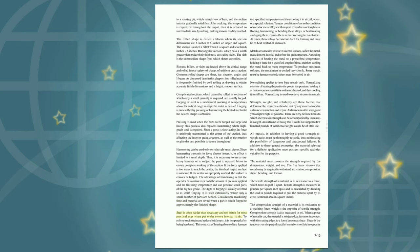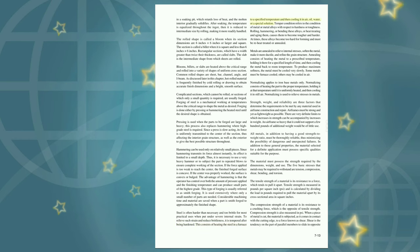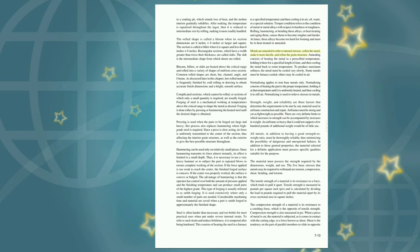Steel is often harder than necessary and too brittle for most practical uses when under severe internal strain. To relieve such strain and reduce brittleness, it is tempered after being hardened. Tempering consists of heating the steel in a furnace to a specified temperature and then cooling it in air, oil, water, or a special solution. Temper condition refers to the condition of metal or metal alloys with respect to hardness or toughness; rolling, hammering, bending, or heat treating and aging alloys causes them to become tougher and harder. Metals are annealed to relieve internal stresses, soften the metal, make it more ductile, and refine the grain structure. Annealing consists of heating the metal to a prescribed temperature, holding it there for a specified length of time, and then cooling it back to room temperature. To produce maximum softness, the metal must be cooled very slowly—some metals must be furnace cooled, others may be cooled in air.